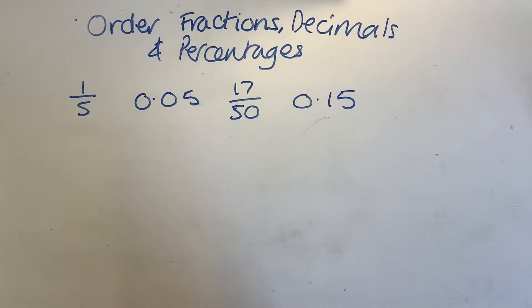So I'm going to have a go at demonstrating this question to you. The question that I looked at has got a fifth, it's got 0.05, 17 over 50 and 0.15. Now we're going to work out, try and put them all into the same system to begin with, I suppose.